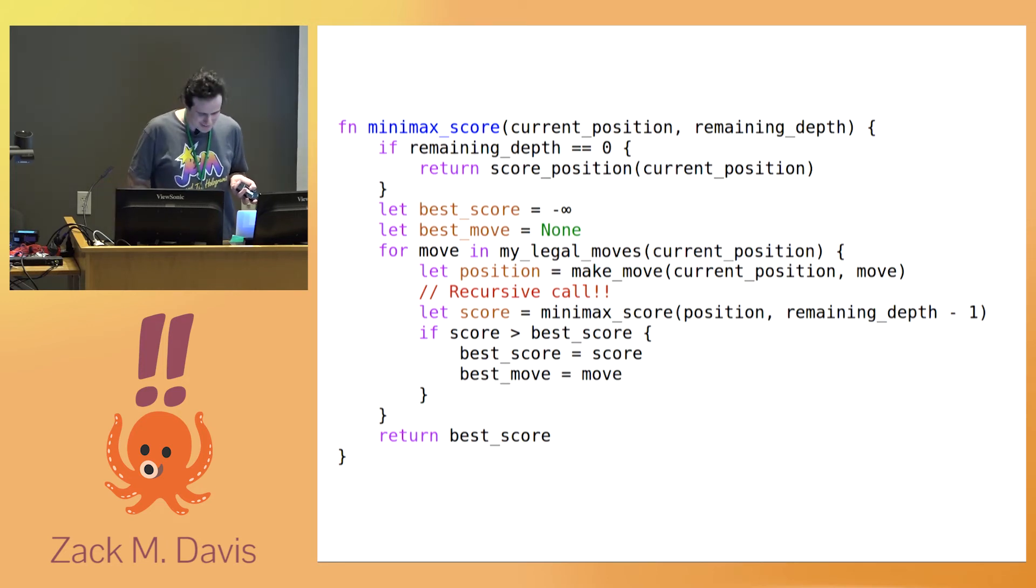Second insight about counterfactual reasoning. So the adversarial recursive nature of my best move, given her best move, given my best move, leads to some behavior that looks really strange compared to how you would reason about optimizing an environment that isn't intelligently opposing your goals.